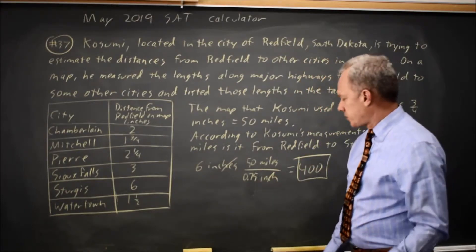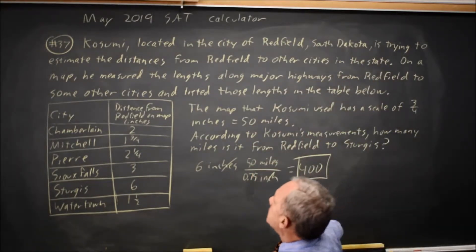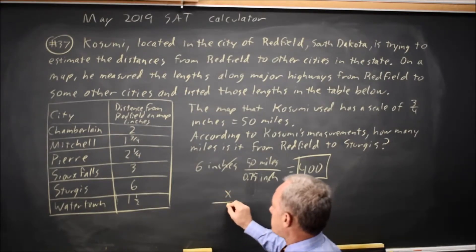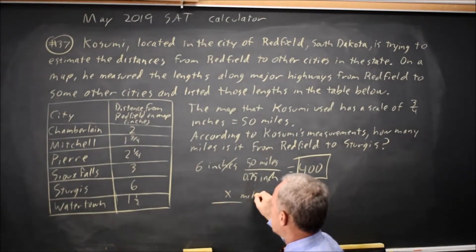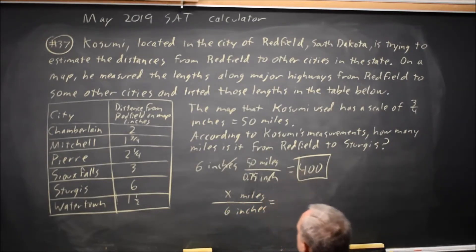I could also set that up as a proportion, and it gives me the same computations. The distance in miles, x, over the distance in inches on the map - x miles over 6 inches - equals the proportion on the map scale.